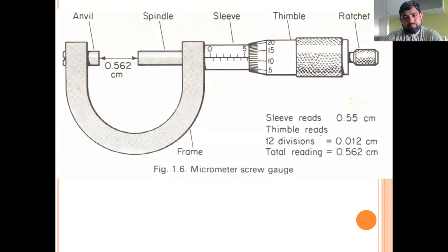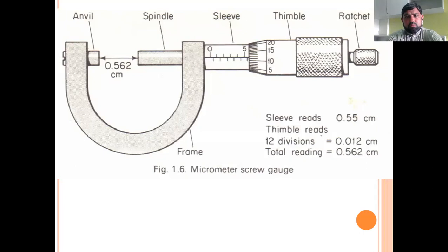We will do a quick revision of the micrometer. We will not go into detail of its construction, but it has a main scale and a circular scale, a space where we hold the object, a lock to hold the reading, and a ratchet.